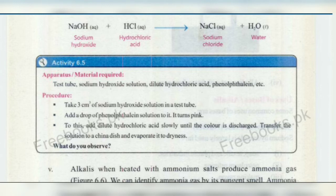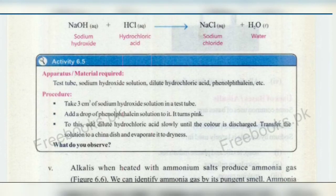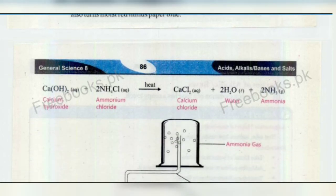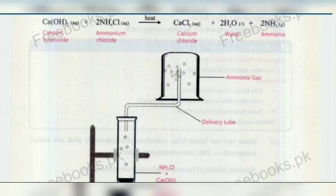Coming to the experimental verification of Charles' law: here you can see two cylinders with movable pistons. In the first cylinder, the temperature is T1 and the volume is V1, giving the equation V1 over T1 equals K. In the second cylinder, we have heated it so the temperature changes from T1 to T2. According to Charles' law, when temperature increases, volume also increases — from V1 to V2. The second equation is V2 over T2 equals K. As both equal K, we get V1 over T1 equals V2 over T2, verifying Charles' law.